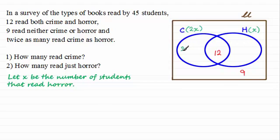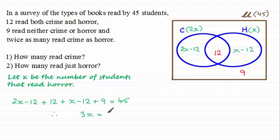Now I know that this survey was carried out amongst 45 students. So we've got 45 students then in the universal set here. And I can form an equation. We would have 2x minus 12 plus 12 plus x minus 12 plus the 9 must equal the 45. So writing that down we've got this. And then simplifying this we end up with 3x equaling 48 from which x will equal 16.